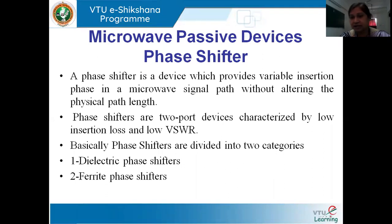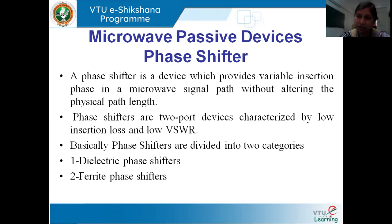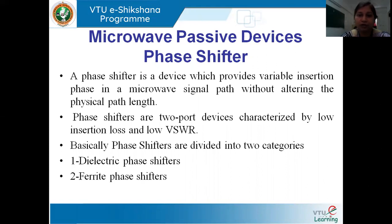In the previous class, we studied an attenuator. In this class, we are going to study a phase shifter. In case of an attenuator, we were reducing the amplitude of the signal. When we talk about a phase shifter, we have to be very clear that we are not going to change the amplitude of the signal; rather we are concentrating on the phase, that is the direction of propagation. So basically, the phase shifters are two-port devices.